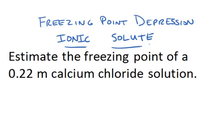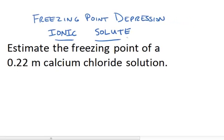Let's estimate the freezing point of a 0.22 molal calcium chloride solution. We're going to assume, since this is an ionic compound, that this solution is an aqueous solution, which means that this particular salt is dissolved in water.